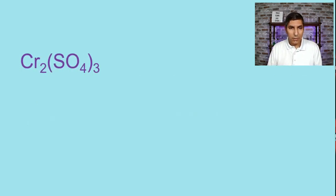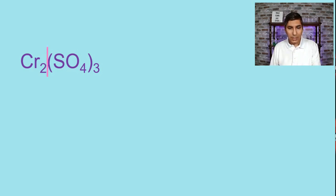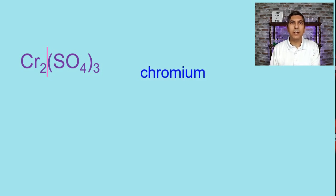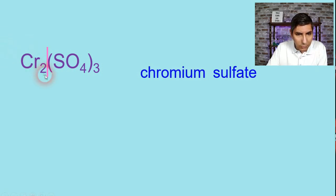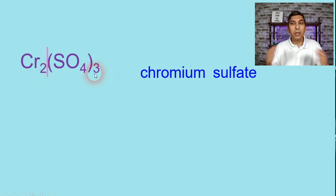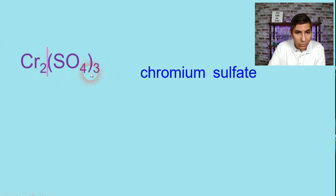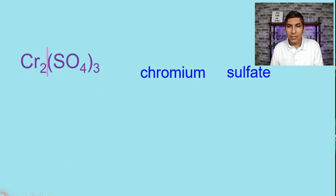Let's try Cr2(SO4)3. Split this down the middle. Cr is the symbol for chromium, and SO4 is the polyatomic ion sulfate. We notice chromium is a transition metal, so we need to figure out its charge by unswapping the subscripts. The 2 and the 3 are unswapped — chromium has a charge of positive 3. So chromium(III) sulfate is the name for this compound.